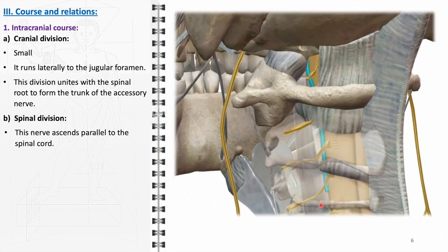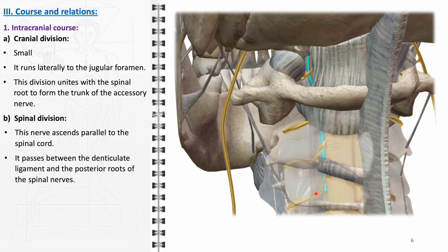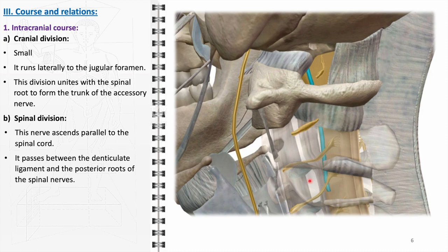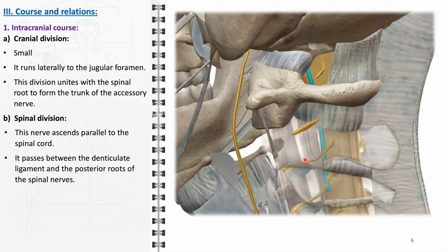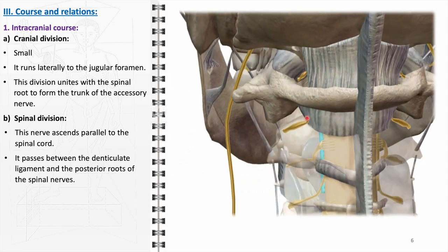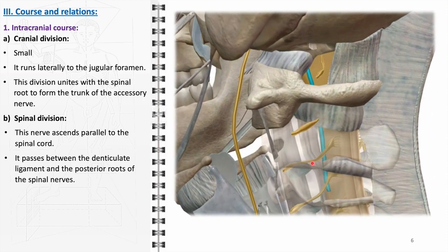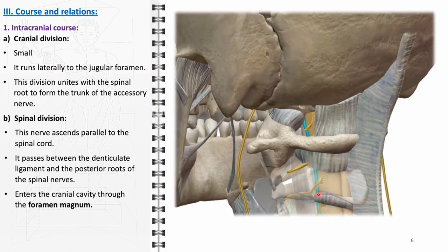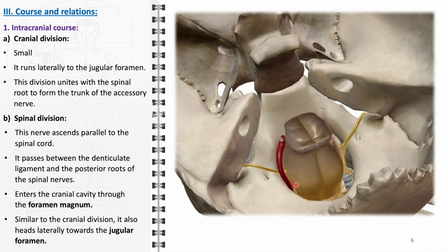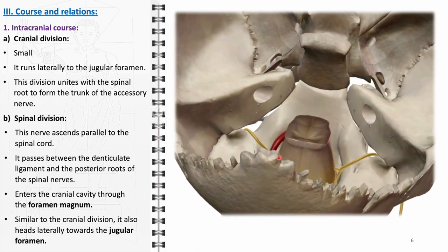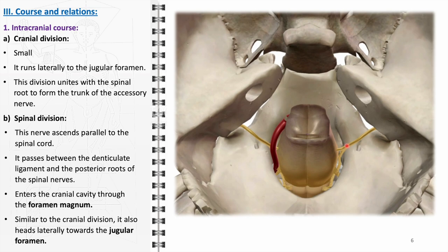The spinal division exhibits a unique pathway beginning from the upper cervical segments of the spinal cord. Unlike its cranial counterpart, this division originates outside the cranium. It ascends alongside the spinal cord within the vertebral column, making its way between the denticulate ligament and the posterior roots of the spinal nerves, ensuring the nerve's protection and proper alignment. Upon reaching the foramen magnum, the spinal division enters the cranial cavity, joins with the cranial division, and mirrors its lateral course towards the jugular foramen, where both divisions converge and transition to their extracranial course.